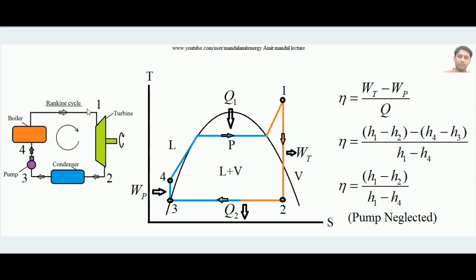To recap the four processes: 1 to 2 is isentropic expansion in the turbine where work is developed; 2 to 3 is heat rejection in the condenser where steam converts back into liquid; 3 to 4 the pump takes liquid water from point 3 and sends it to the boiler at point 4; and 4 to 1 is heat addition in the boiler (Q1). Heat rejected in the condenser is Q2. The pump absorbs work to force water from the low-pressure condenser to the high-pressure boiler.